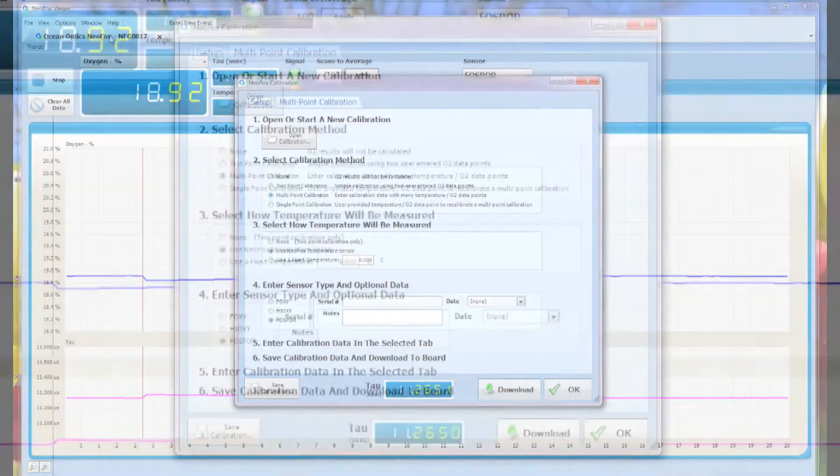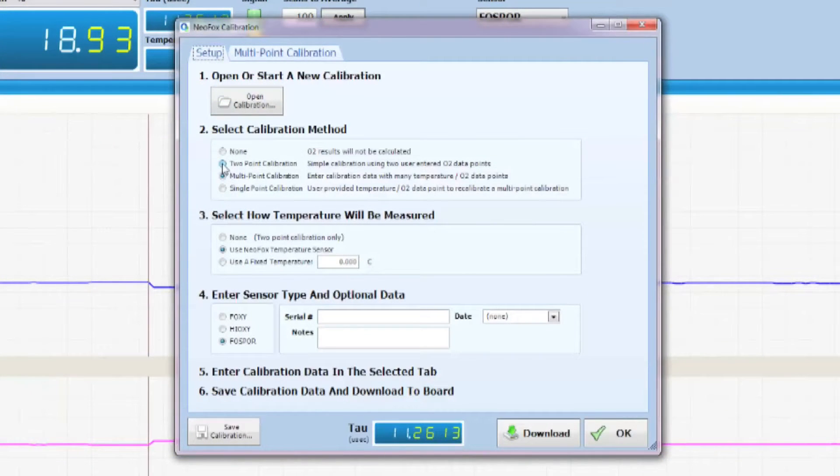In the setup box, you're going to click on two-point calibrations up at the top and down at the bottom, make sure you have the correct chemistry for your probe choice selected: phosphor, hi-oxy, or foxy.